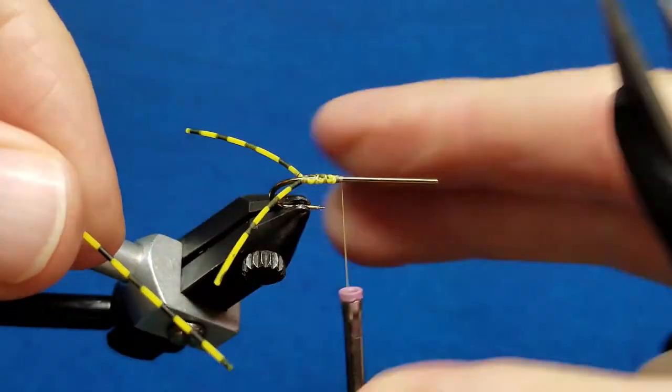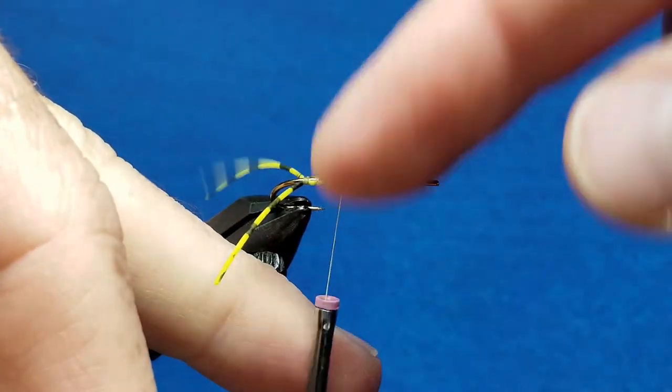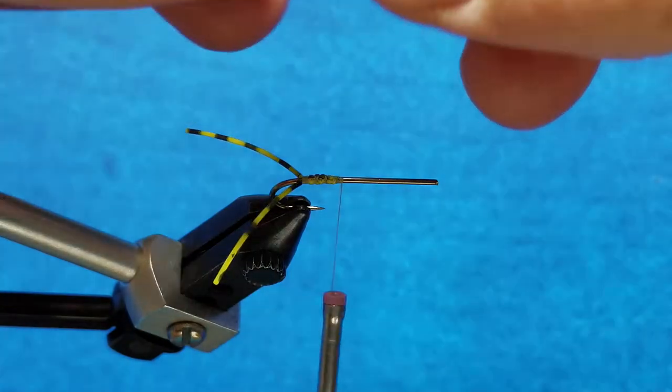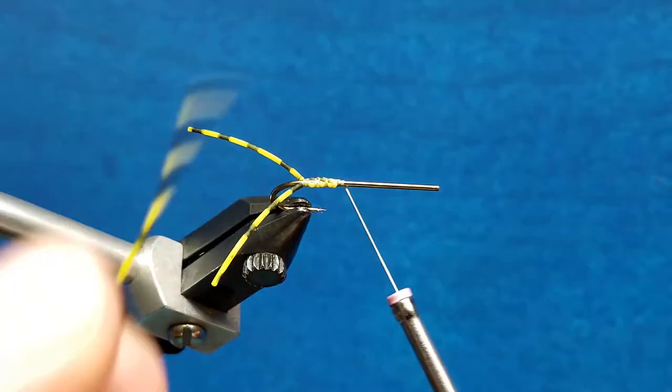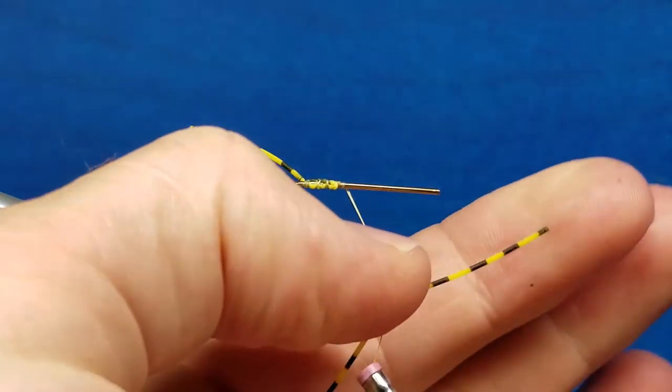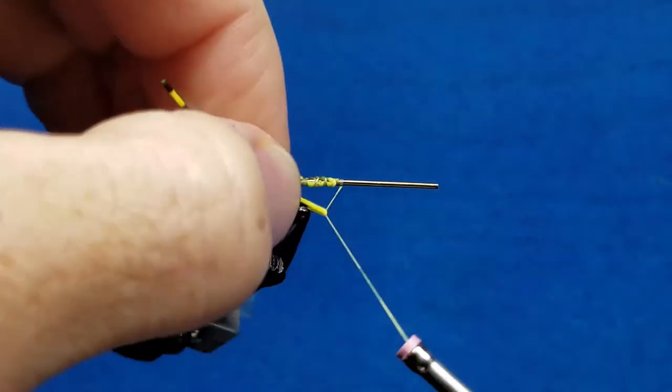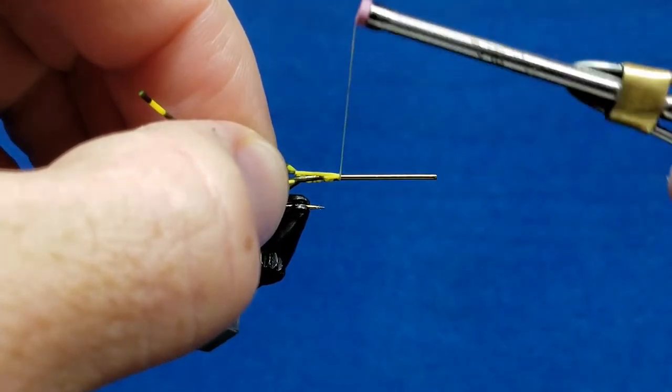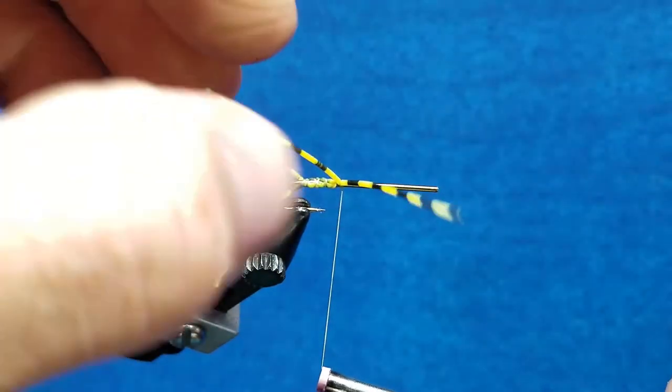They use a technique where they come in with extra crisscross wraps over the top of the rubber leg. So for that, once again I'm going to straddle this and I'm going to pull it right down on top of the shank where I want it. I take one solid firm wrap and I'm going to let it go.